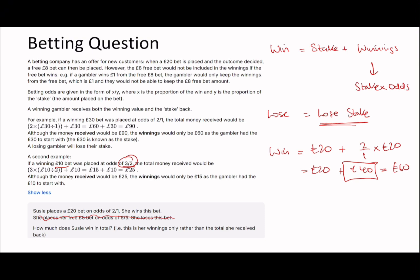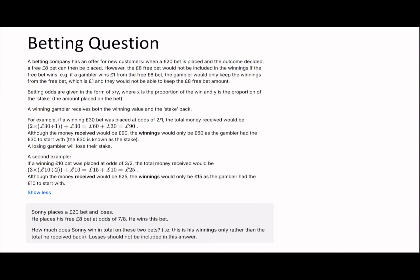On to the next question. How much does Sunny win in total on these two bets? Let's have a look at this one. Places the £20 bet and loses, so for the £20 bet he just loses £20. Places his free £8 bet at odds of 7/8. He wins the bet. So with the free £8 bet, that's a win. With that win, remember he would have kept the original stake plus winnings, but because this is a free bet there is no stake. Because this is a free bet, the only winnings you get are £8 times 7/8, which is £7.